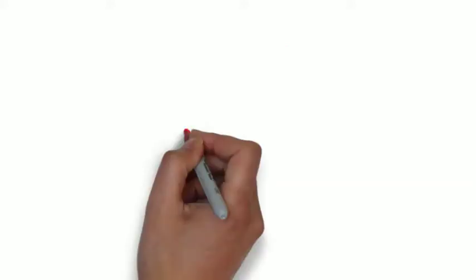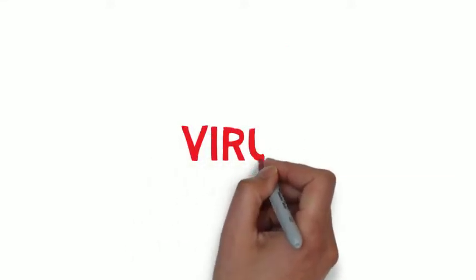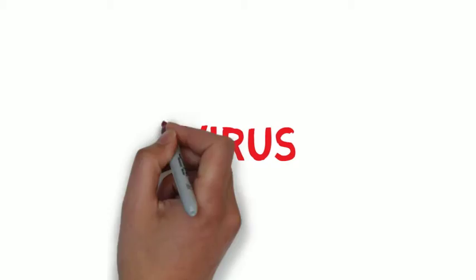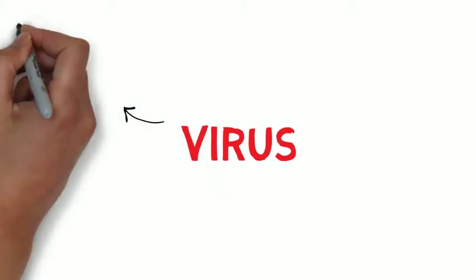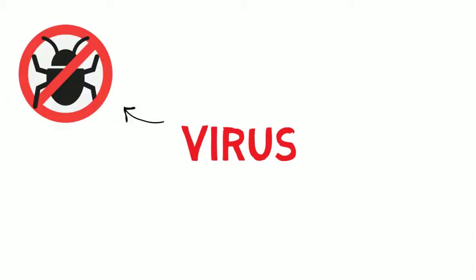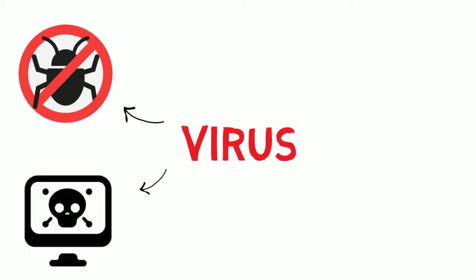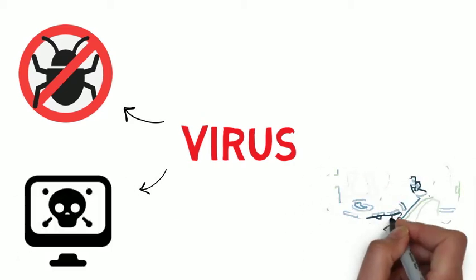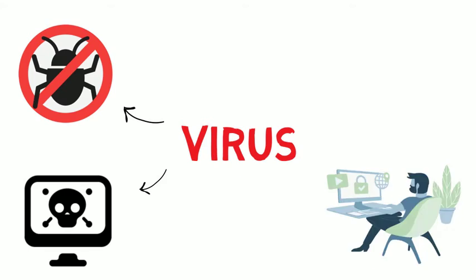Before we dig into the antivirus program itself, we should also know what these viruses are. They are basically not any living organism, as many of us might think. A computer virus is in fact a computer program which works in a way that harms our computer. For example, if someone wrote a program to repeatedly open a single application on a PC, it will create havoc — hence it is considered a virus.